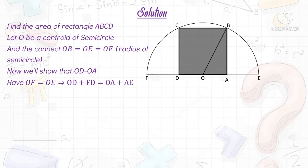We have OF = OE, and then OD + FD = OA + AE. Then OD + 9 = OA + 9.